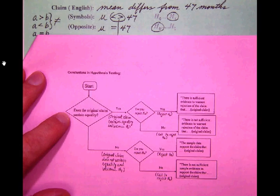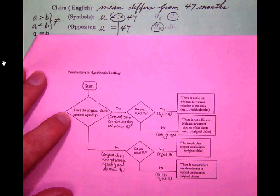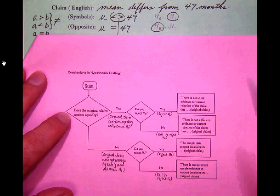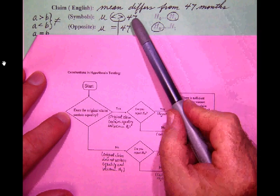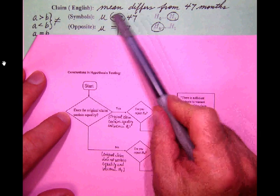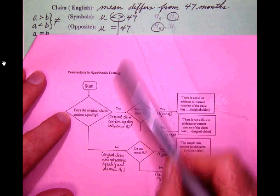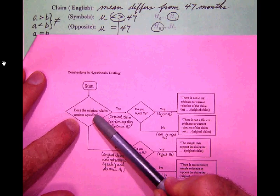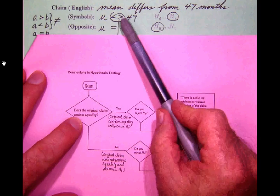So we go back and we say at the start button does the original claim contain equality? Now keep in mind here that we could have claimed this a couple of different ways but we chose to go with the claim that the conclusion in Alex suggested that the mean was different from 47 months. So does the original claim contain equality? No it doesn't because we claimed the difference.